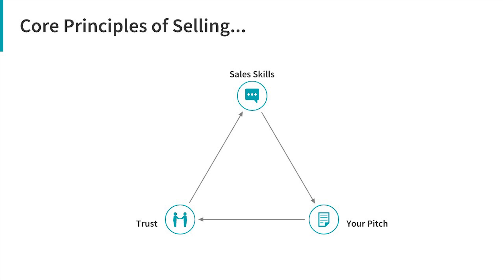The next point is sales skills — your technical ability to sell. Sometimes people don't see sales as a skill; they think it just happens when you're offering something at a good price. That is not the case. Sales skills, like learning a musical instrument or a sport, is a technical skill you can develop — but it does require trust and a good pitch. The third thing is pitch: the actual thing you're selling, what you're offering, the price, whether it's a one-page website, a two-week project, a four-hour job — whatever it is you're offering is your pitch.